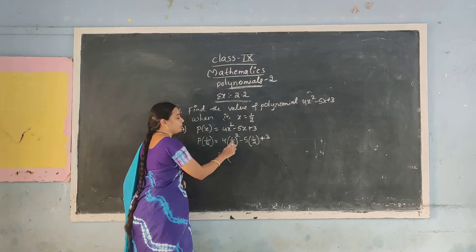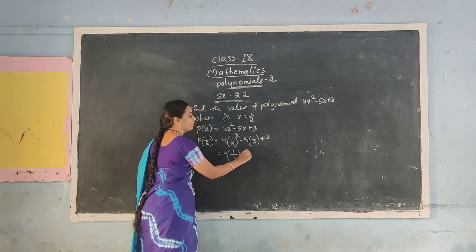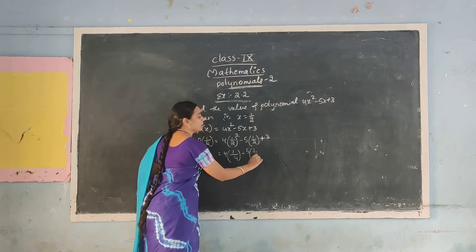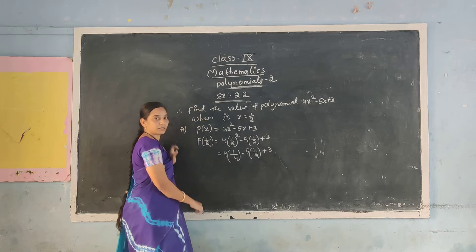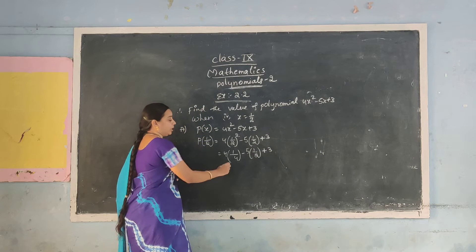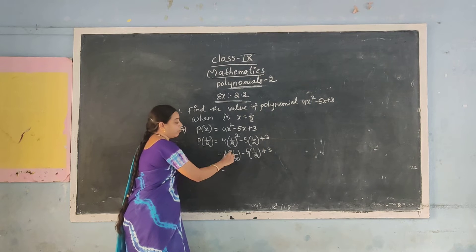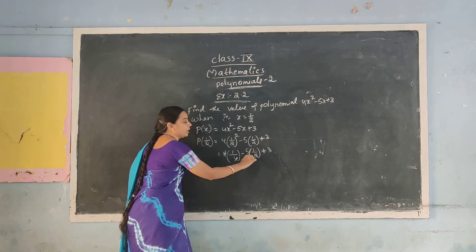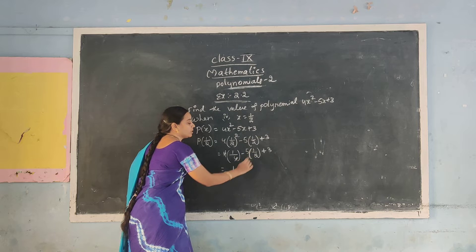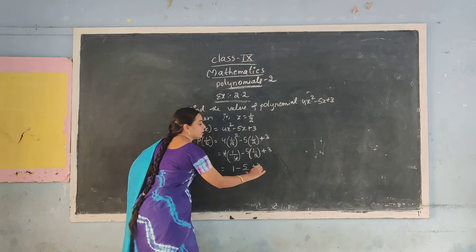First of all you have to solve the powers. 1 squared is 1 and 2 squared is 4, so (1/2) squared = 1/4. Next, remove the bracket and multiply: 4 into 1/4 gives 1. Then 5 ones are 5 by 2. Next is plus 3.